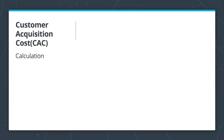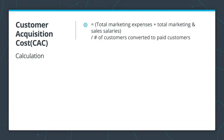CAC is computed by dividing all the costs spent on acquiring more customers — marketing expenses, sales and marketing salaries — by the number of customers converted to paid customers in the period the money was spent. A good rule of thumb is that you want your CAC to be 25% of the revenue, the money you earn from all your customers.